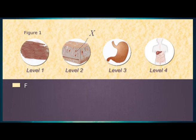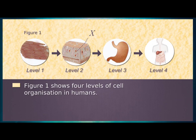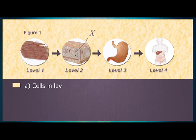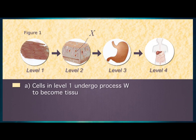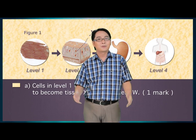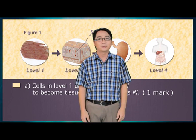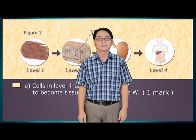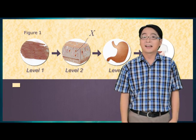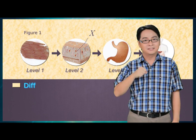Let's try a question. Figure 1 shows 4 levels of cell organisation in humans. Part A: cells in level 1 undergo process W to become tissue X. Name process W. One mark. Cells in level 1 have to differentiate to become specialised cells with a specific function. So the answer for part A is differentiation.